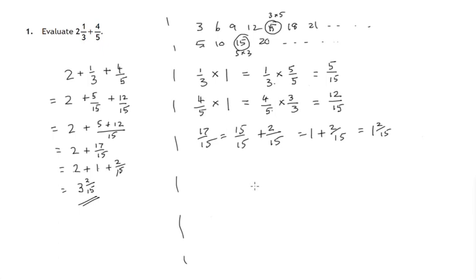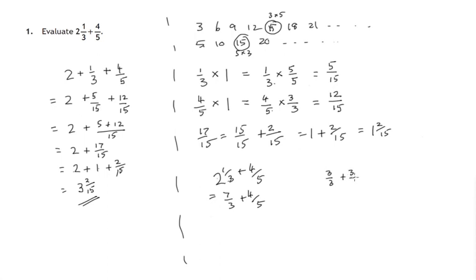Now there are other ways of doing this question. You might well have been taught to take the two and a third and change it — three twos are six plus one, giving seven thirds. The reason you can do that is because we're saying that two can be written as three thirds and another three thirds. That's two lots of three plus one third, which would be your seven thirds.